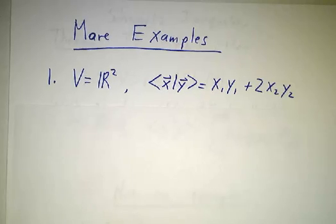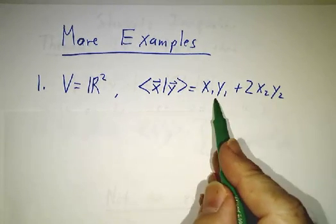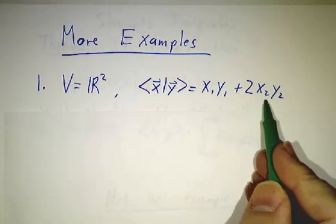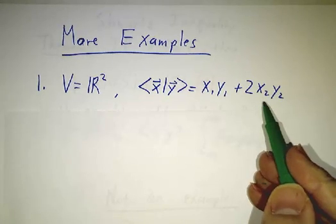Here are a couple of non-standard examples. On R², we don't have to use the standard inner product. We could take x₁y₁ plus twice x₂y₂. You can go back and check that it satisfies the four axioms. That makes it an inner product.